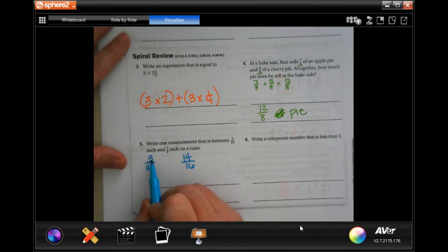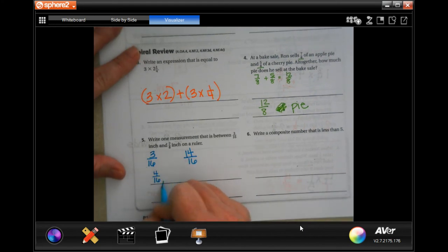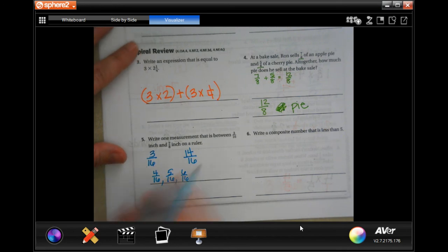So, any number that's between three and fourteen. So, you could have four-sixteenths, five-sixteenths, six-sixteenths, all the way up to thirteen-sixteenths. You could have any of those numbers. You just need to pick one.